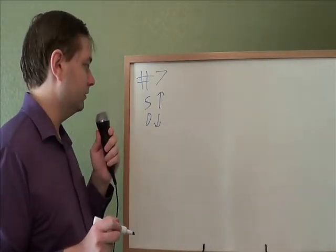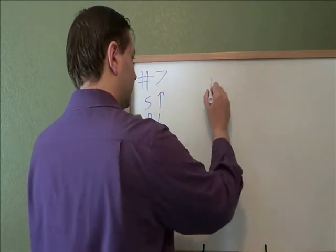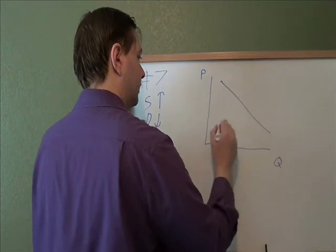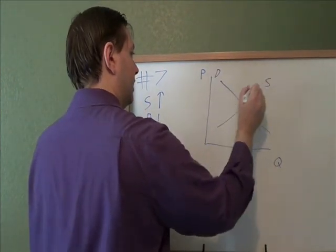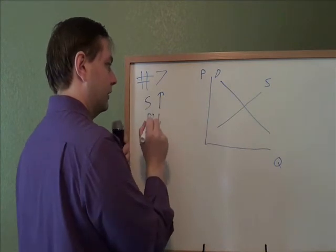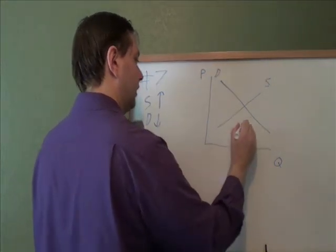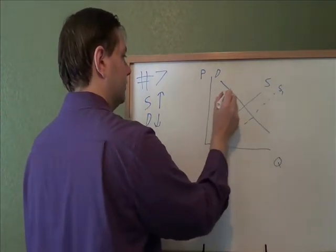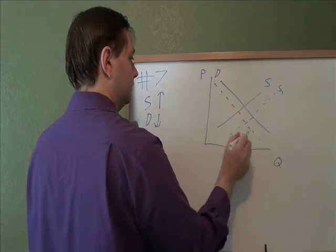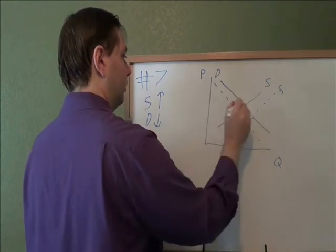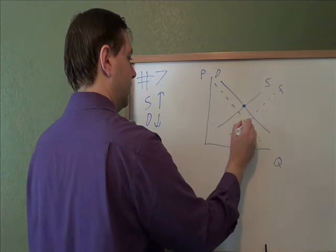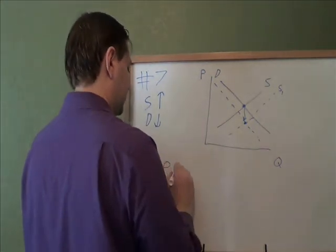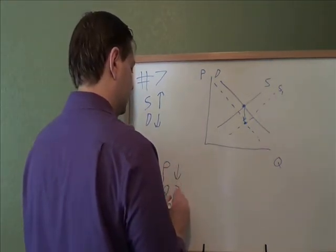Number seven: what happens when supply increases and demand decreases? Supply increases means it moves to the right to the new supply line. Demand decreases means it moves to the left. Overall, we've gone from the old equilibrium to the new one — that's mostly a downward movement, mostly a change in price. Price has decreased and quantity is indeterminate.